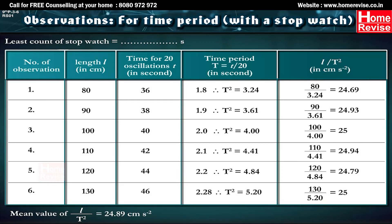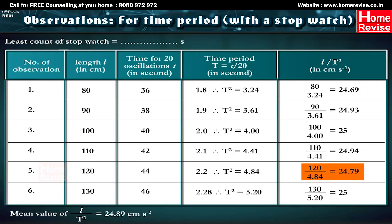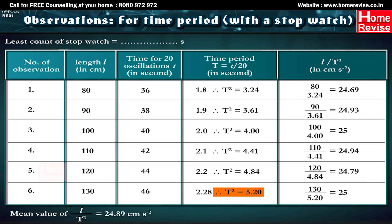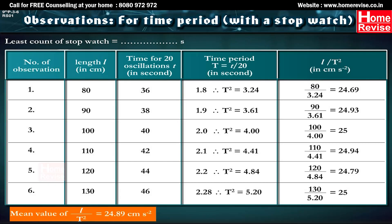Observation 5: L = 120 cm, t = 44 s, T = 2.2 s, T² = 4.84, L/T² = 120/4.84 = 24.79 cm/s². Observation 6: L = 130 cm, t = 46 s, T = 2.28 s, T² = 5.20, L/T² = 130/5.20 = 25 cm/s². Mean value of L/T² = 24.89 cm/s².